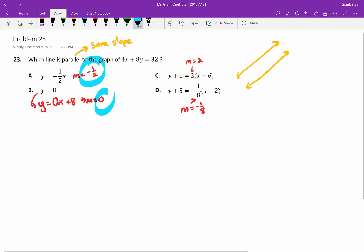We have negative one-half, zero, two, and negative one-eighth. And of course the question is, good job you found all those slopes. Which one of them is the same as this equation up here?